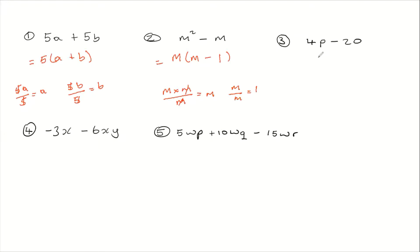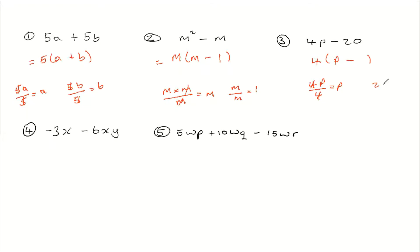So let's look at the third example. We have 4p minus 20. What is the common factor? The highest common factor between 4 and 20 — that would be 4. So we're going to write 4 here and open a bracket. To get the term inside of the bracket, we're going to use the common factor to divide each term. So it's going to be 4p divided by 4. Clearly, 4 into 4 will give us 1, and 1 times p will just leave us back with p. Then we'll have 20 divided by 4, and that is just going to give us 5. So the factorized form is 4(p minus 5).